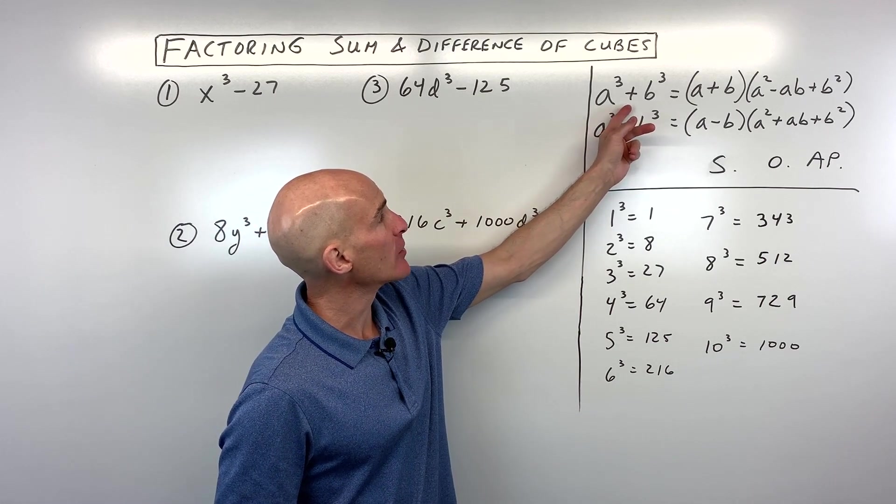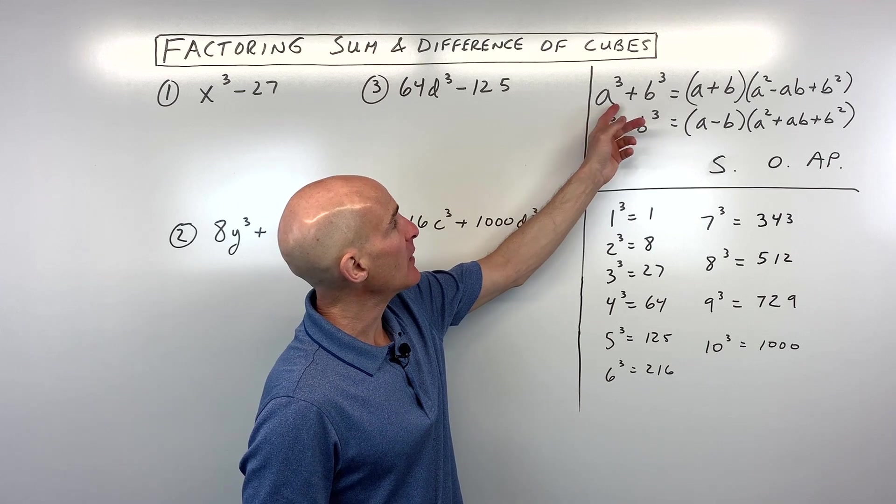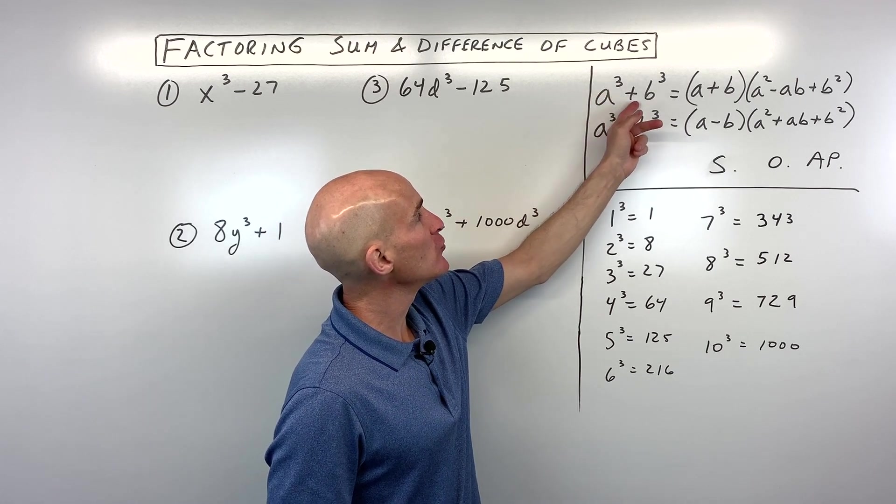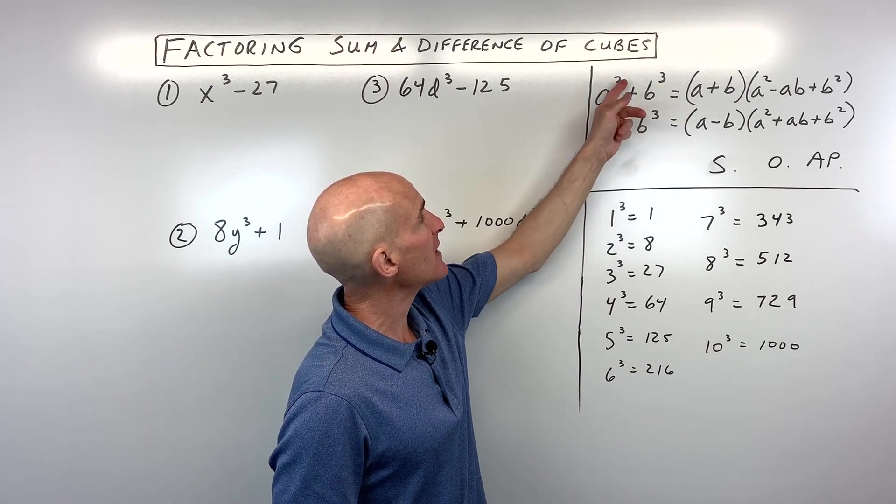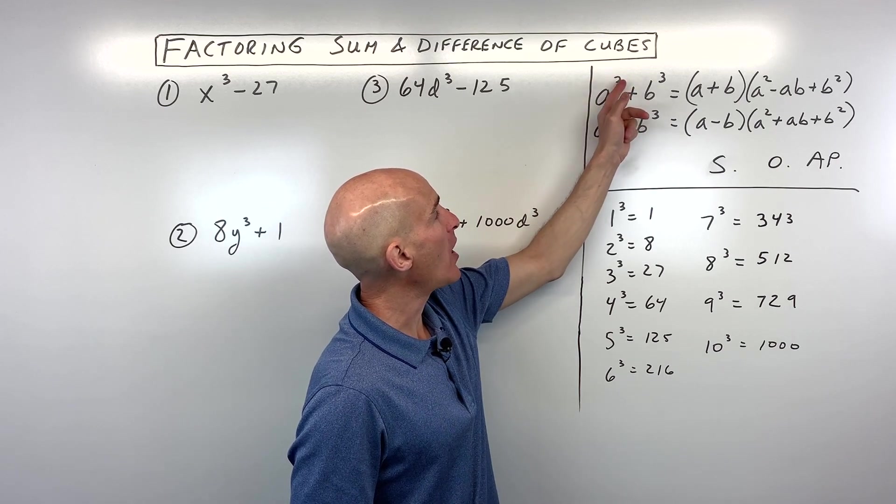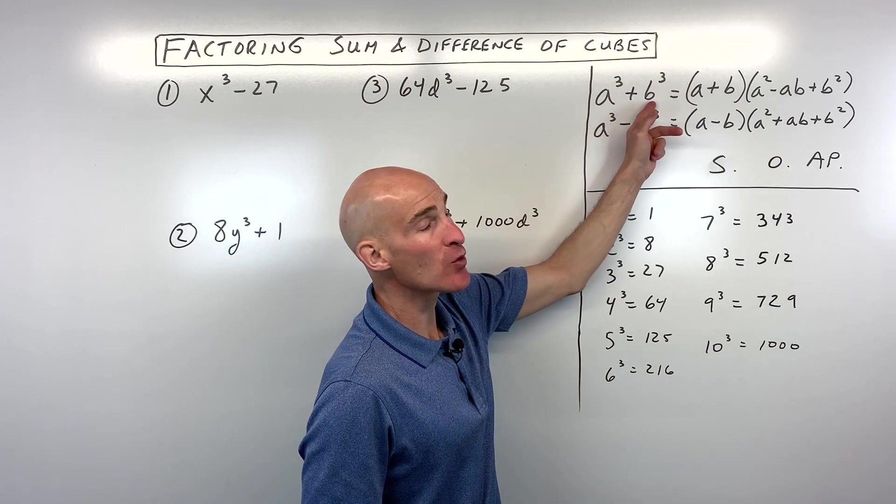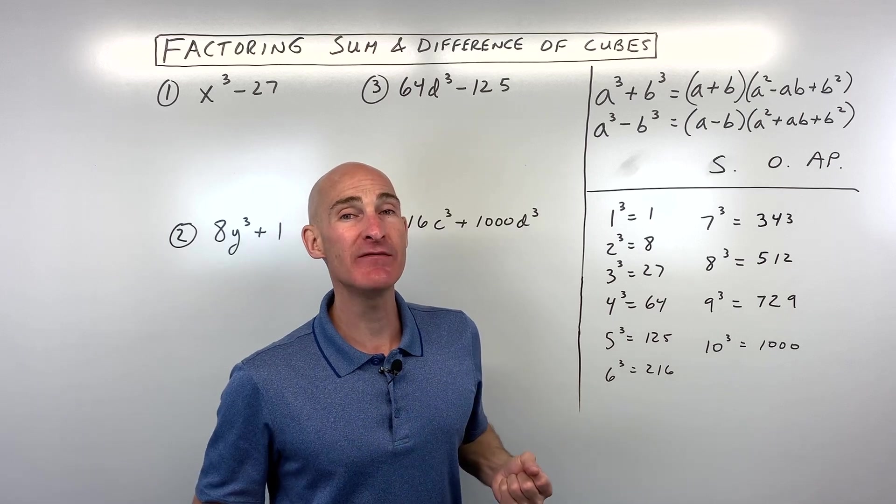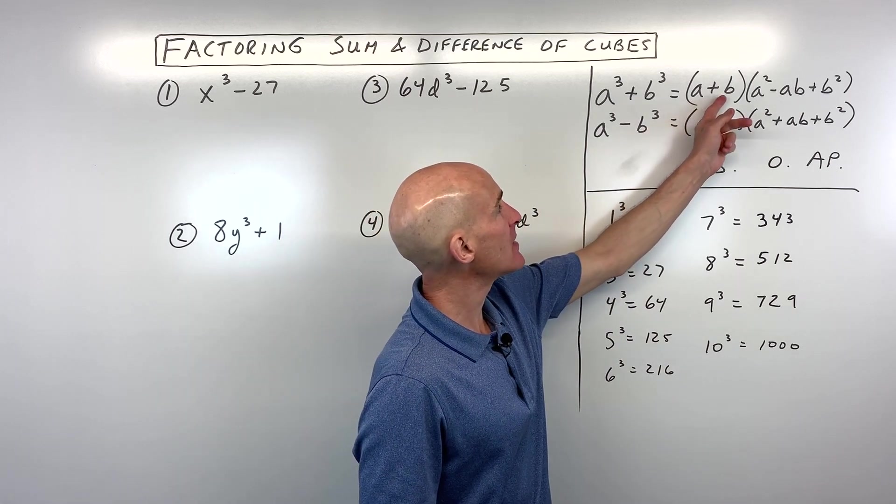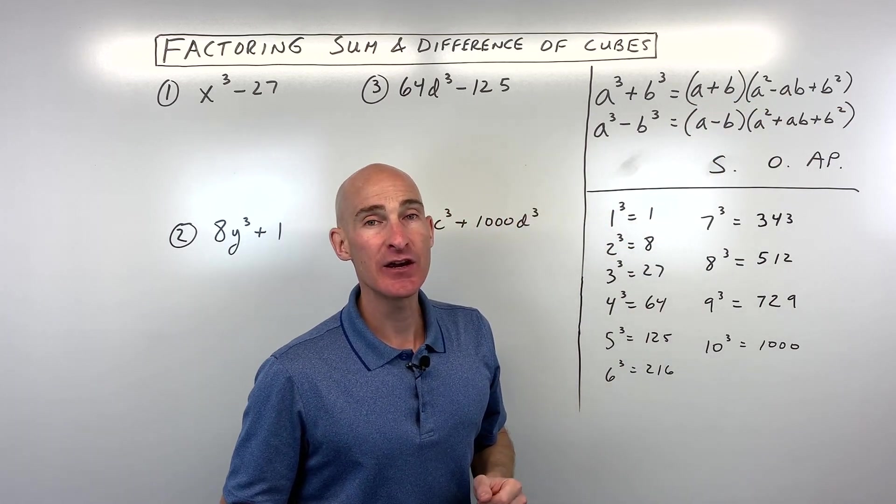Now, the next thing we want to look at here is the formula. When you think about a perfect cube plus a perfect cube, what you want to do is take the cube root of this quantity. You want to take the cube root of this quantity so you can figure out what your A and B values are. And then we're going to substitute in this formula as seen here.